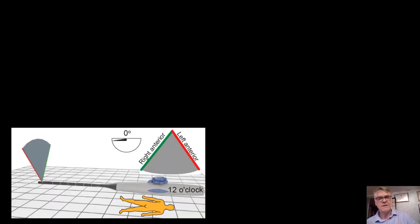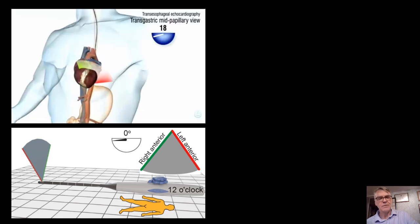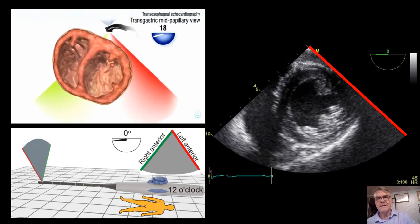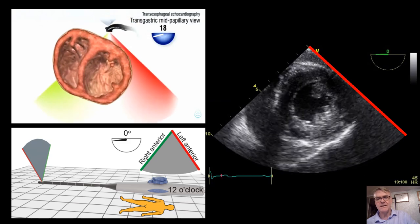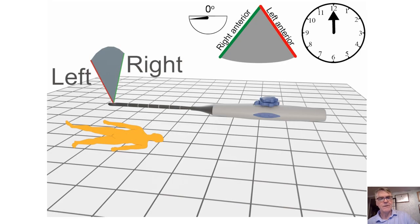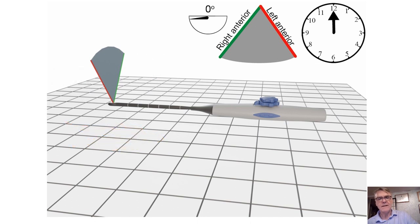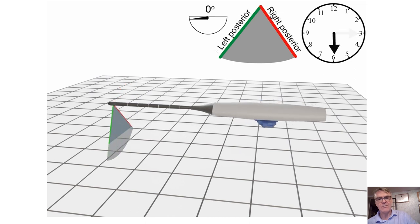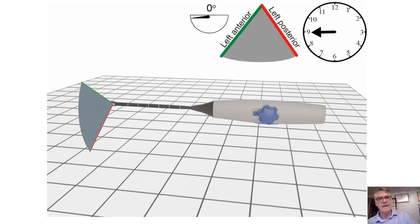When using a TEE probe outside the heart, the orientation of the image will change. For instance, when you do a transgastric view, what you see on the right side of the screen is the left side of the patient, and what you see on the left side is the right side. Whenever you mechanically rotate the TEE probe, the appearance of the image will be different. At six o'clock, what you see on the right is the right of the patient and on the left is the left of the patient, and orientation changes as you rotate. At 90 degrees, what you always see on the right side is the cephalad portion of the anatomical structure.